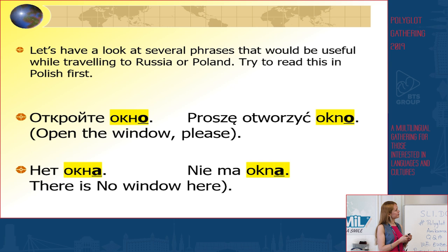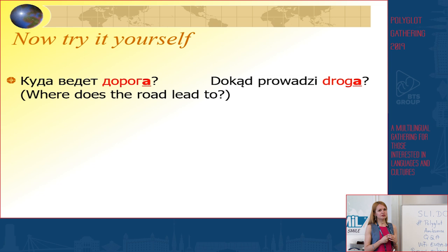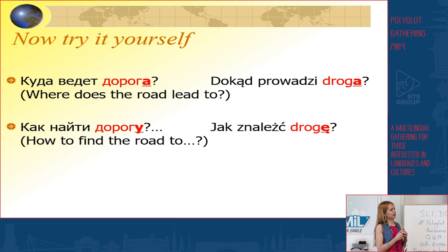Now let's try it yourself. Let's look at the first feminine gender noun again — it was doroga / droga. Dokąd prowadzi droga? Jak znaleźć drogę? Куда ведёт дорога? Как найти дорогу? Just to remind you: in Russian, 'a' goes into 'u', and in Polish, 'a' goes into 'ę'.